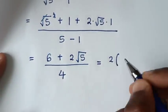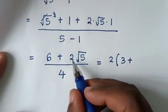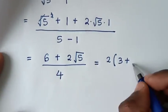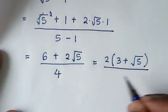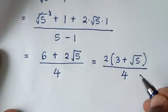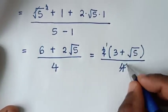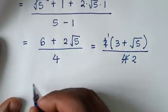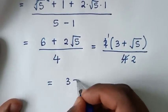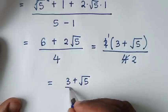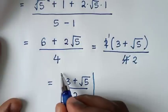We factor 2 out of the numerator: (6 + 2√5) = 2(3 + √5), then divide by 4. The 2 cancels with 4, giving a final simplified answer of (3 + √5) over 2.